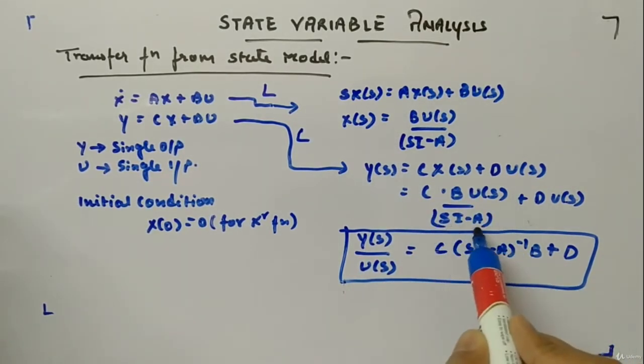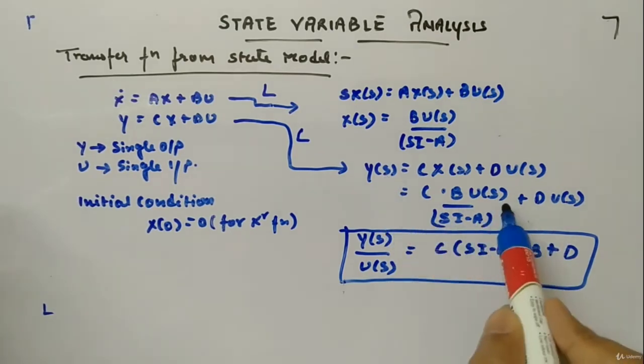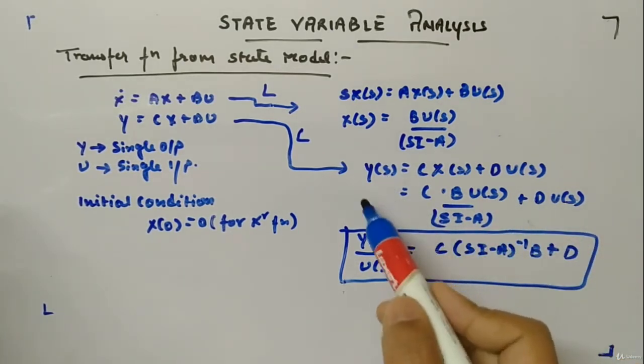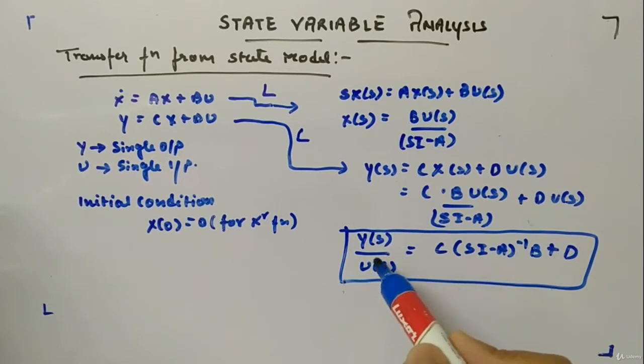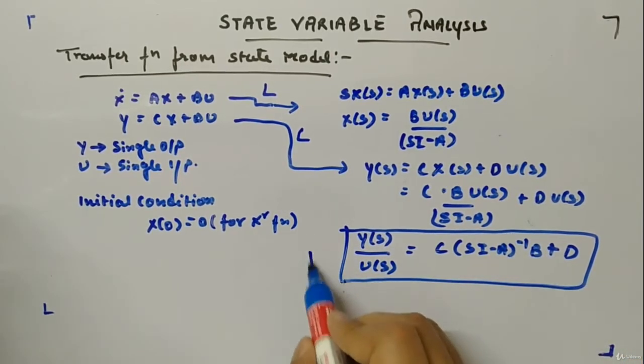Now you plug the value of X(s) from here to here, so you will get C times BU(s) divided by (sI - A) plus DU(s). And you rearrange it, U(s) is taken common, and in the left hand side denominator you will bring it back, so you will get Y(s) divided by U(s) is equal to C(sI - A)^(-1)B plus D.